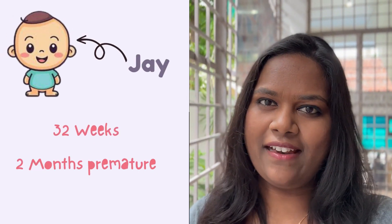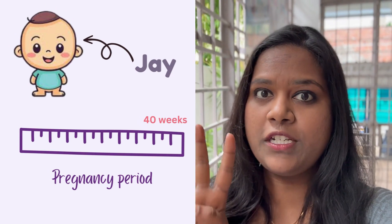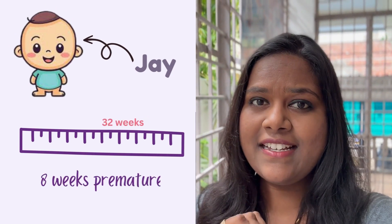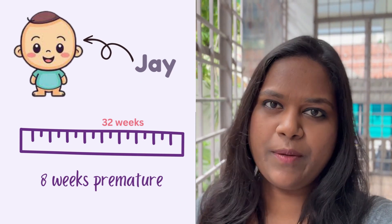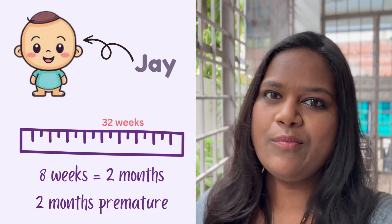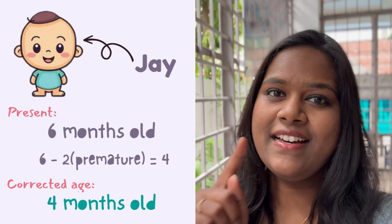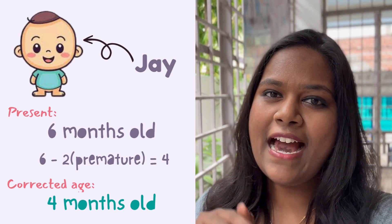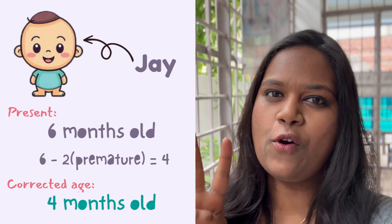Let's look at an example and learn how to calculate corrected age. If baby J is born at 32 weeks, your total pregnancy period is supposed to be 40 weeks. So if baby J is born at 32 weeks, that means he is eight weeks premature — eight weeks is two months. So baby J is two months premature. Now if baby J is six months old, you calculate the corrected age: six months minus two months premature equals four months. The corrected age of baby J is four months.